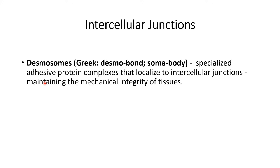Another important intercellular junction between cardiac muscles are desmosomes, derived from the Greek terms desmo meaning bond and soma meaning body. Desmosomes are adhesive protein complexes that help bond or connect two adjacent cells together, helping to maintain the mechanical integrity of the tissues.